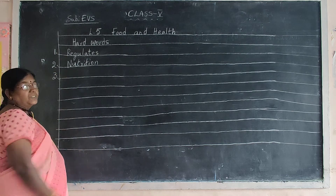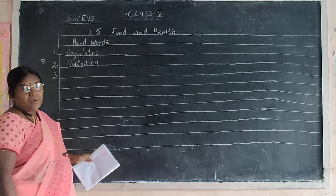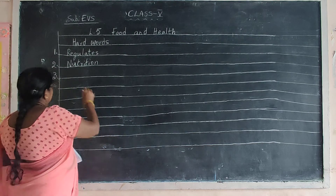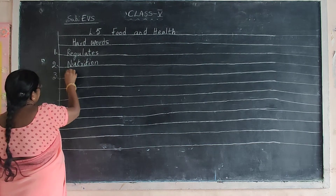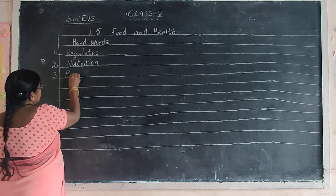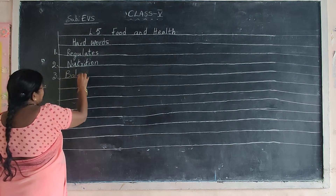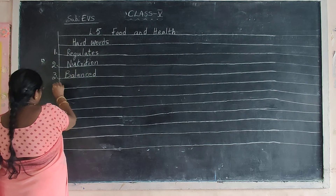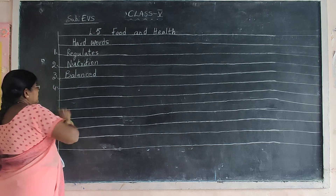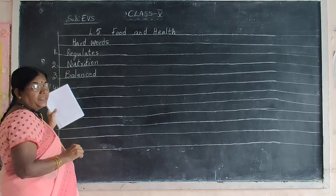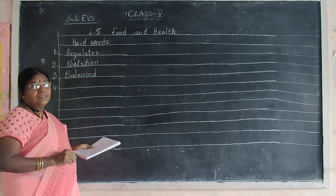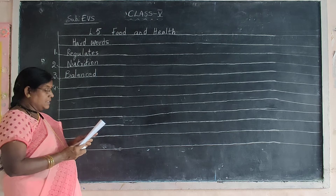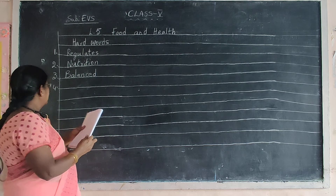Third one. Put three in the margin. Balanced. B-A-L-A-N-C-E-D. Balanced.